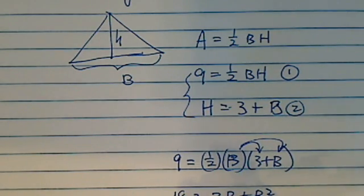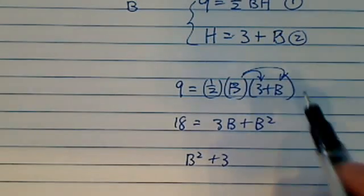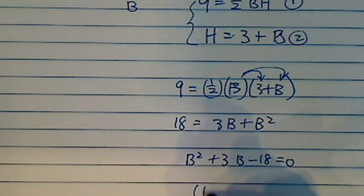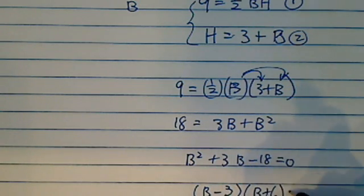Now I have a quadratic equation here on hand. So b squared plus 3b minus 18 equal to 0. If you factor it out, it's b minus 3 times b plus 6 equal to 0.